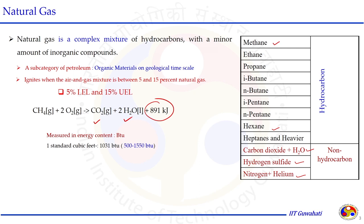Natural gas is a mixture of several compounds, including inorganic compounds that are not combustible. If their percent is high, the energy content gets reduced. The energy content of natural gas is measured in BTU, varying from 500 to 1550 BTU. On average, you can say 1031 BTU. Another unit of measurement is mm BTU — that is 1 million BTU — which is equivalent to 10 therms.